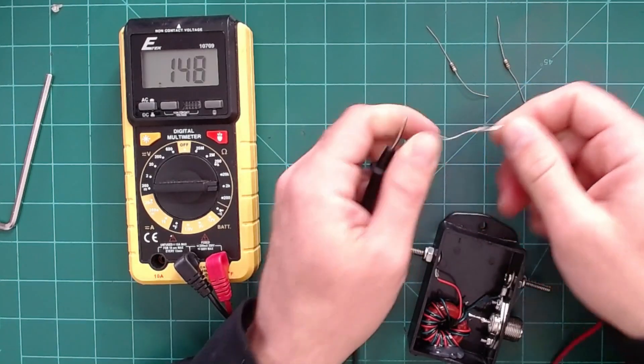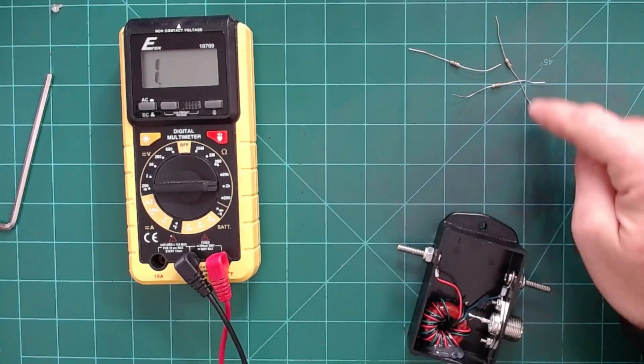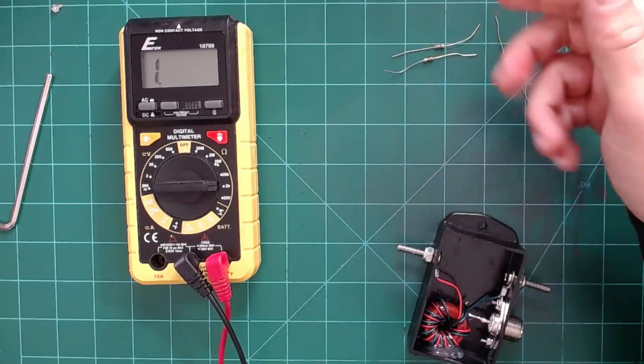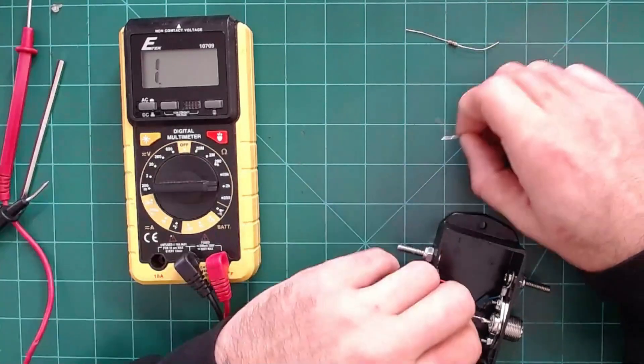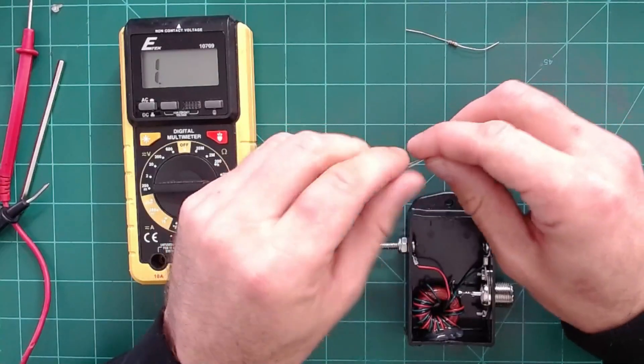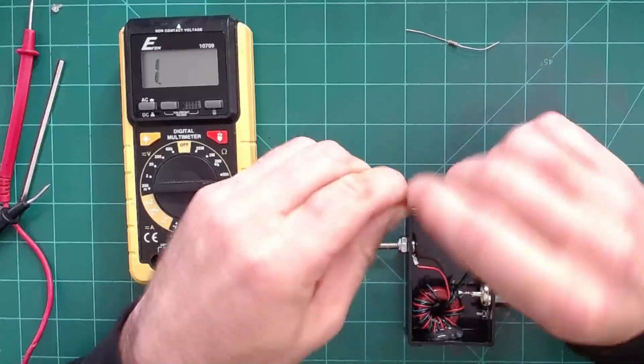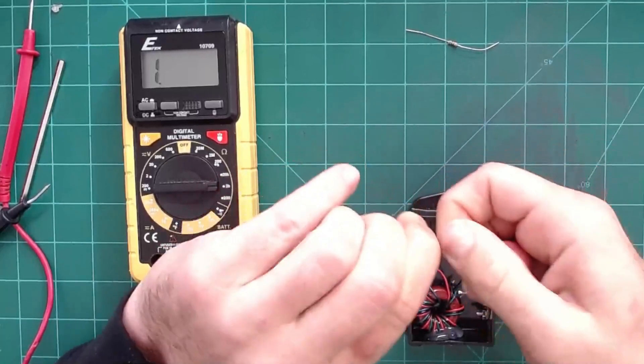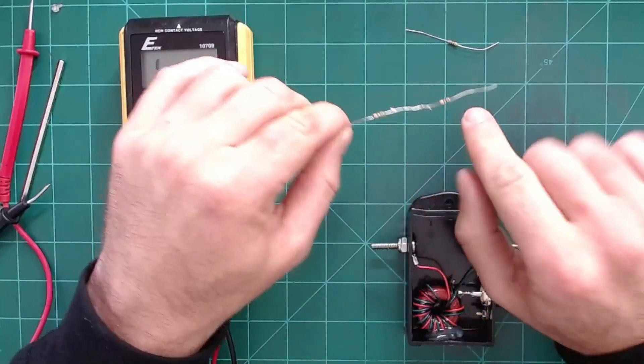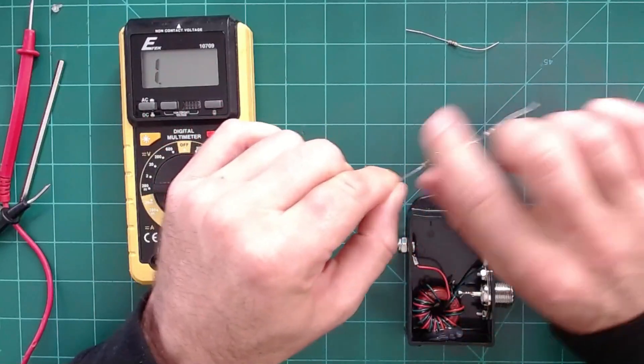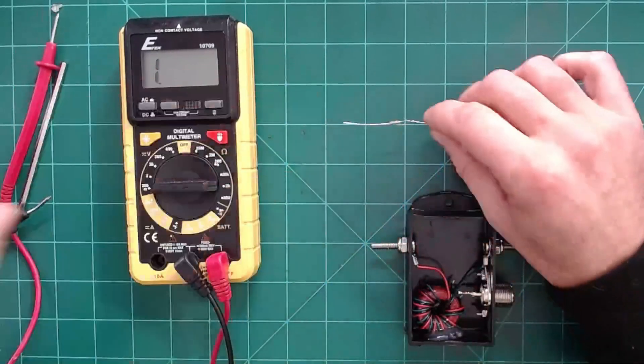And then the same thing here. Well, that math should add up to 150, 150 is 300, plus 150 is 450. For this example, I'm just going to go ahead and twist these together. It's probably not the best thing to do if you want a permanent solution - if you're going to be doing this often, maybe you would solder them together and then put some nice heat shrink over them.